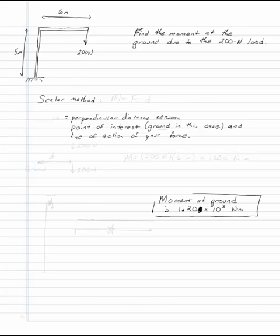Find the moment at the ground due to the 200 newton load. The scalar method says that the moment equals the force times the distance, as long as the distance is the perpendicular distance between the point of interest, in this case the ground, and the line of action of my force.